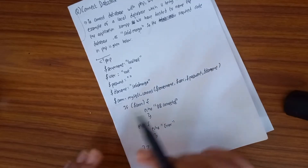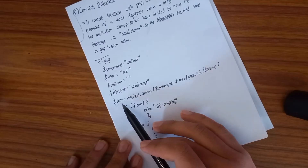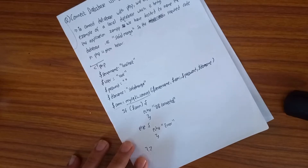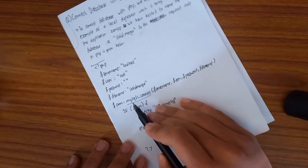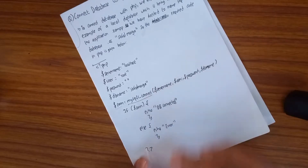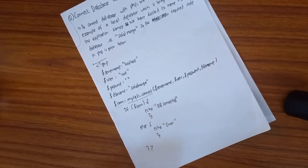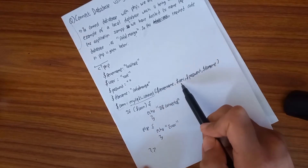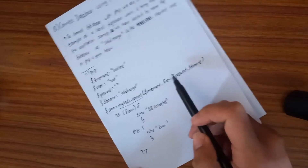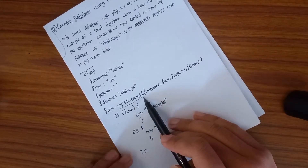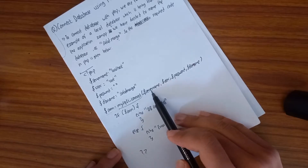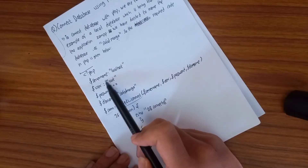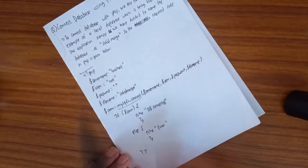Then we create the connection using the 'mysqli_connect()' function. The variable '$conn' is set equal to 'mysqli_connect()'. This function takes the parameters inside the brackets: '$servername', '$username', '$password', and '$dbname' — in that order.